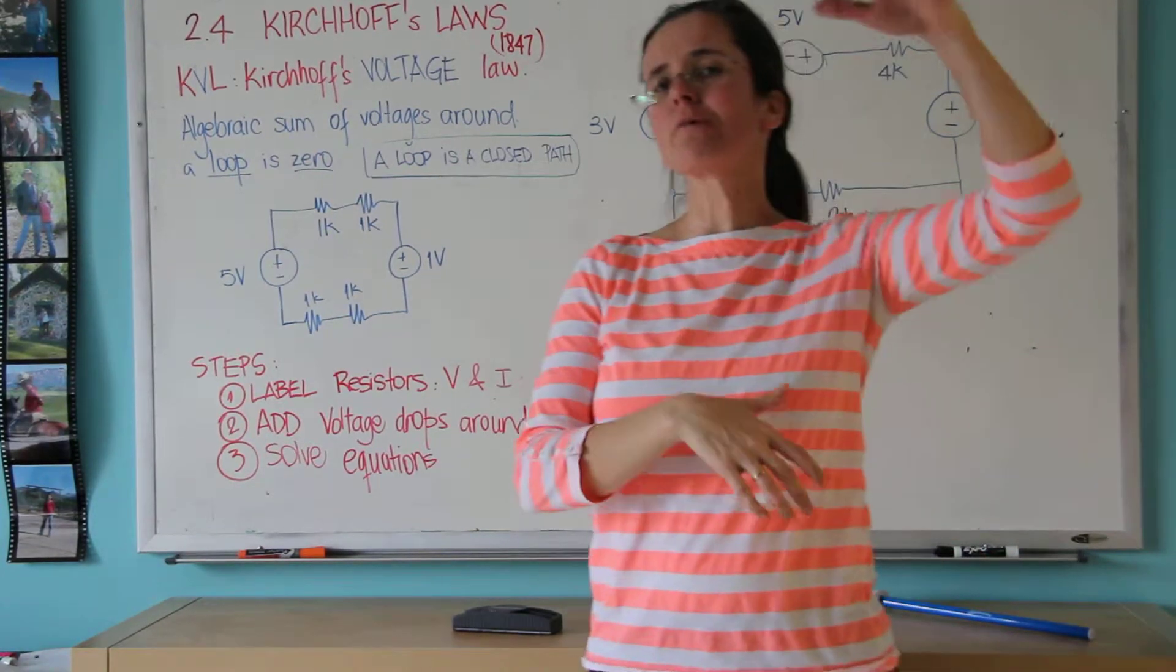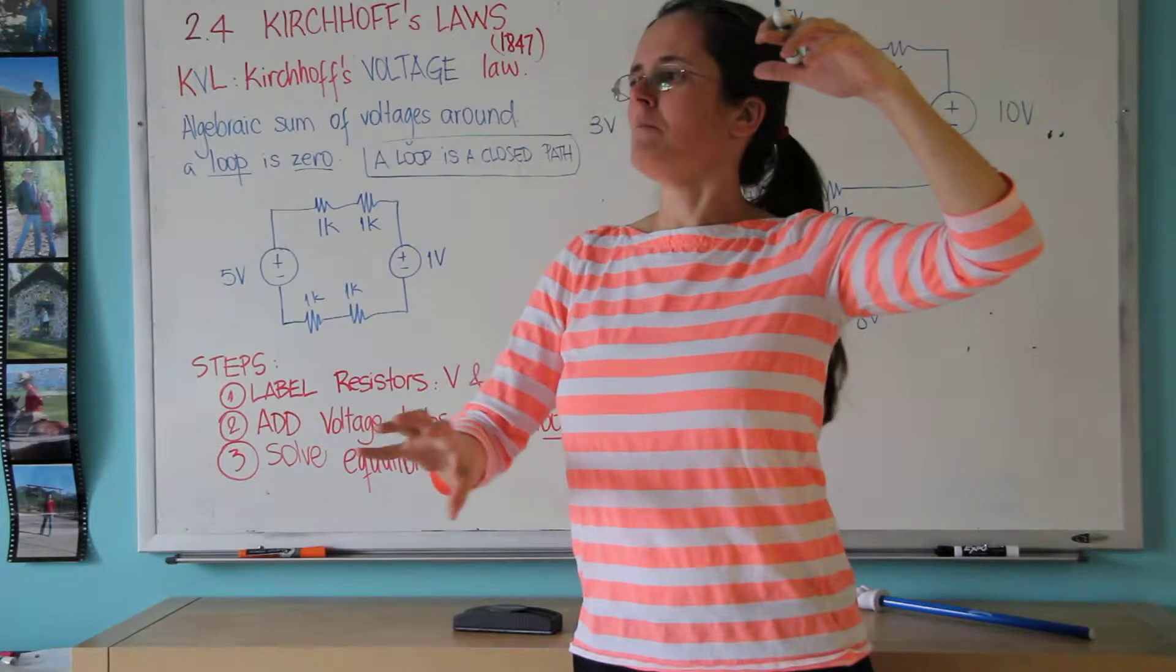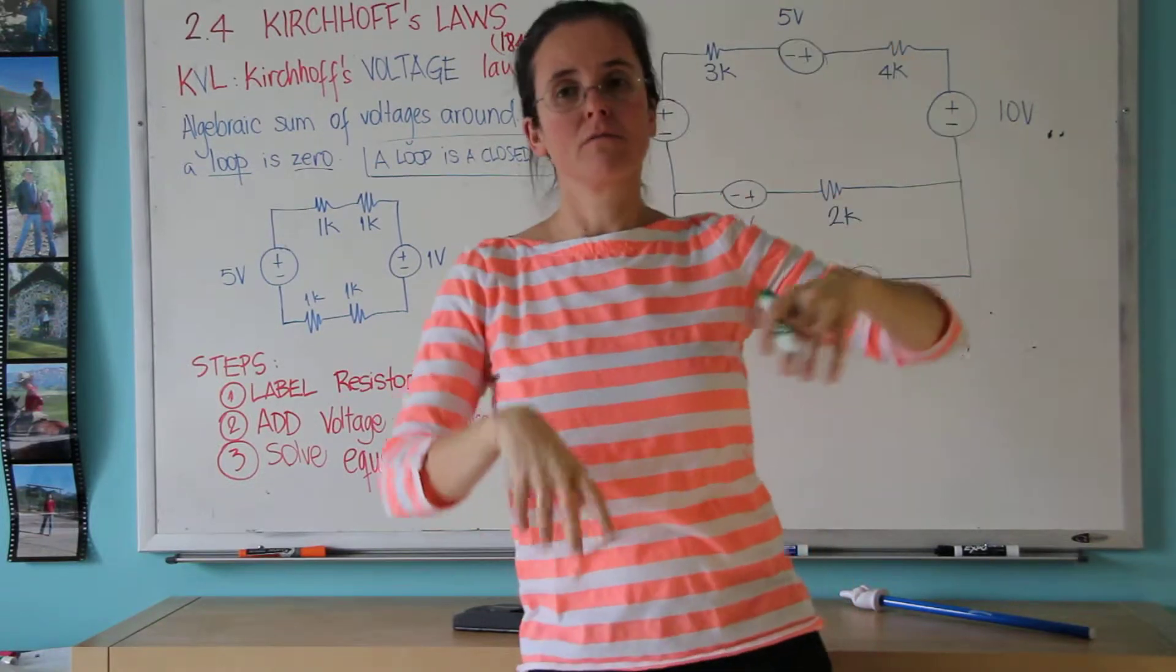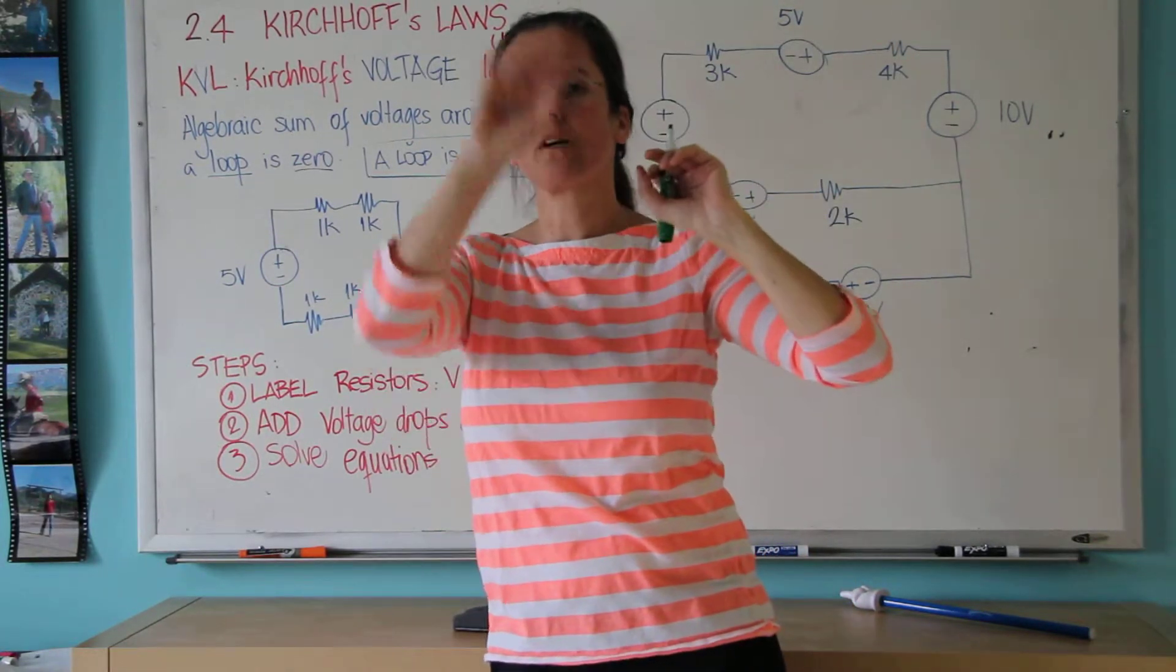Basically, if you have five volts and it's divided up among five resistors and they're all the same, each resistor is going to get one volt.